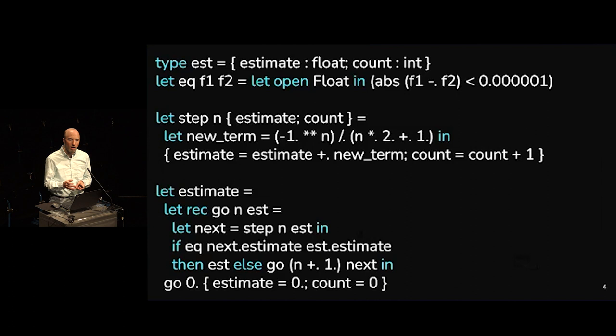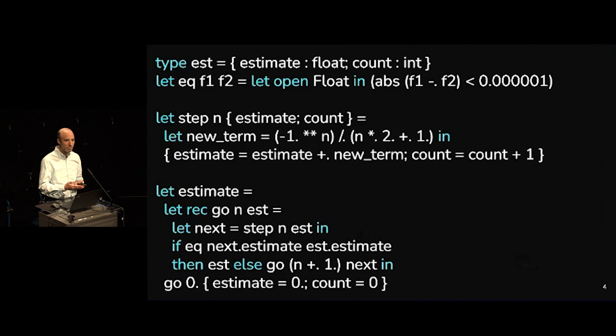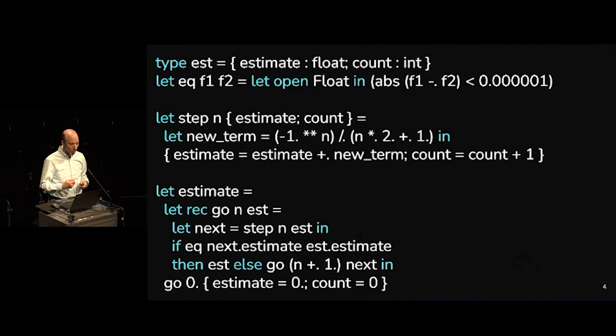When you implement and run this, a rounding error ends up putting us in a cycle at the end, so we're only going to compare up to 10 to the minus 6 — that's this eq function. I have a step function which moves us one further along, making our estimate slightly better based on which term of the sequence we're in, implementing the alternating signs and increasing denominator. Then at the bottom, the estimate value is a fixed-point calculation — we keep going until the next estimate is close enough to the previous one.